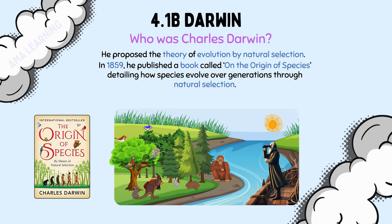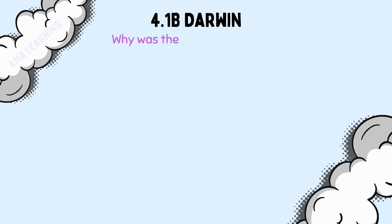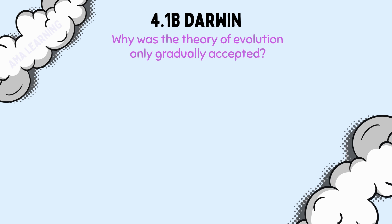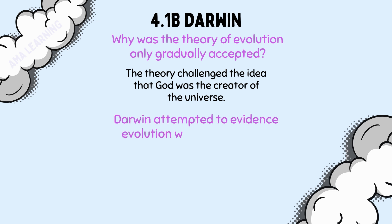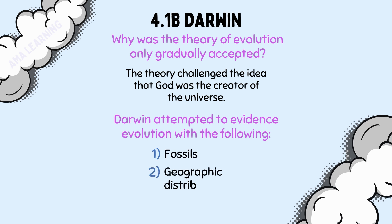His ideas caused a lot of controversy. Why was the theory of evolution only gradually accepted? The theory challenged the idea that God was the creator of the universe. Darwin attempted to evidence evolution with the following: number 1, fossils; number 2, geographic distribution.